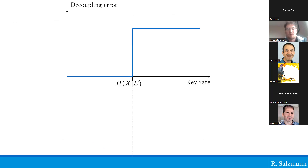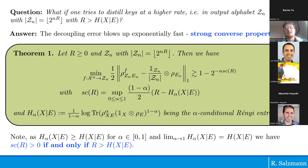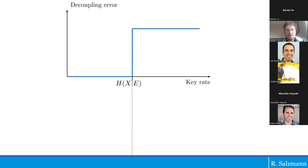To summarize prior work in this area: basically at the same time as our result there was another result looking at average versus worst case. Very recently, Killi and Yongsheng Yao proved equality for the exponent in purified distance, interestingly involving the sandwiched conditional entropy in the range below α = 1, which hadn't been seen in an operational setting before. There's been a lot of progress in this area.